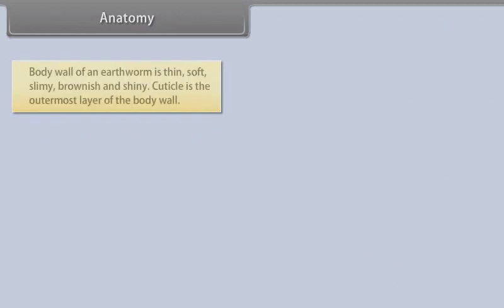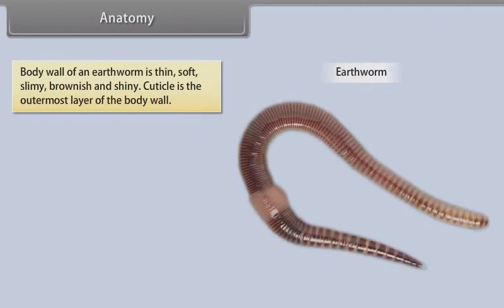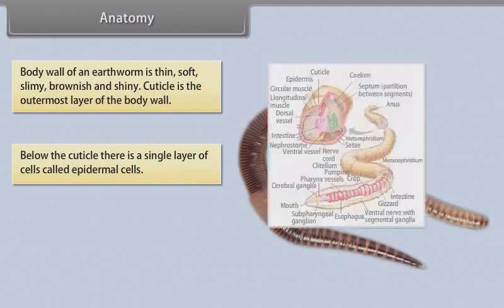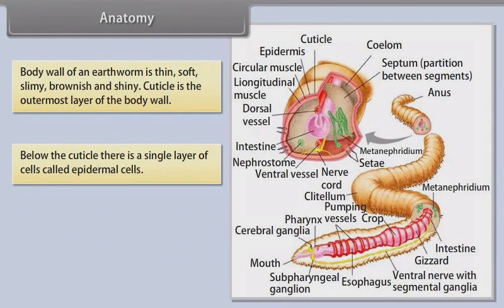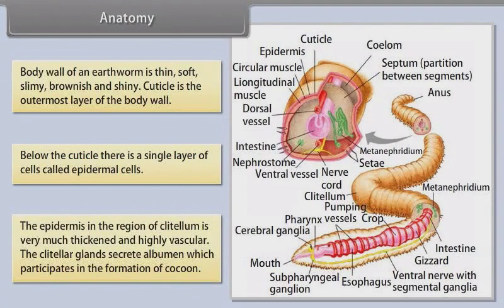The body wall of an earthworm is thin, soft, slimy, brownish and shiny. The cuticle is the outermost layer of the body wall. Below the cuticle is a single layer of cells called epidermal cells. The epidermis in the region of the clitellum is very much thickened and highly vascular. The clitellar glands secrete albumin, which participates in the formation of the cocoon.